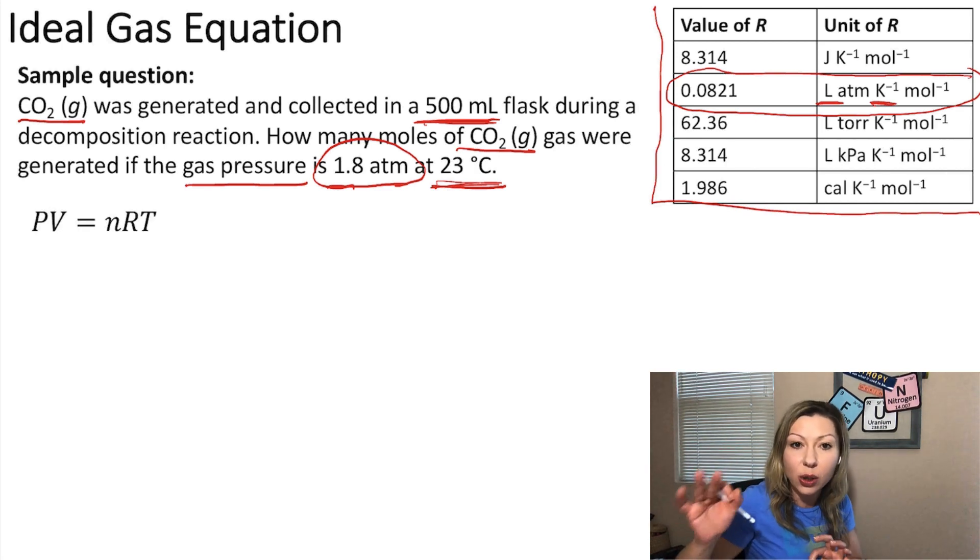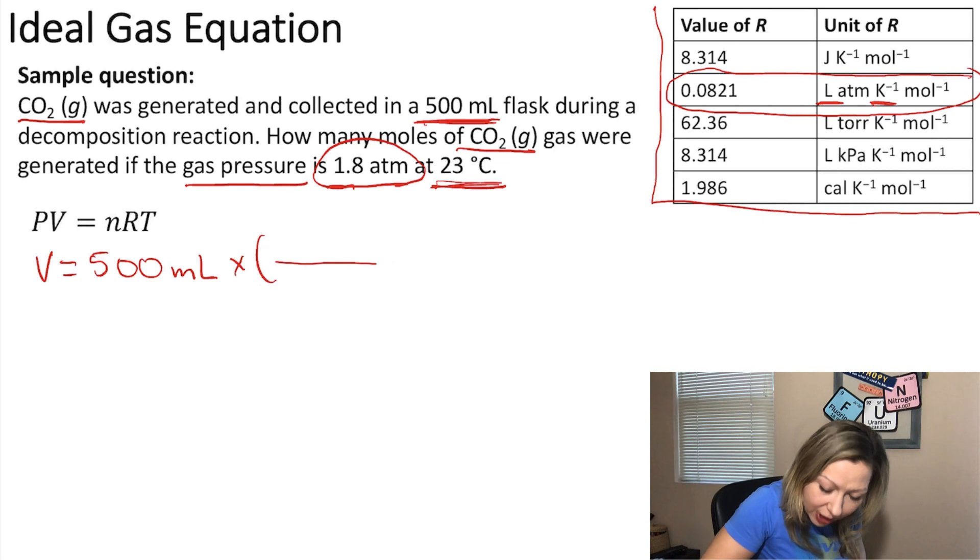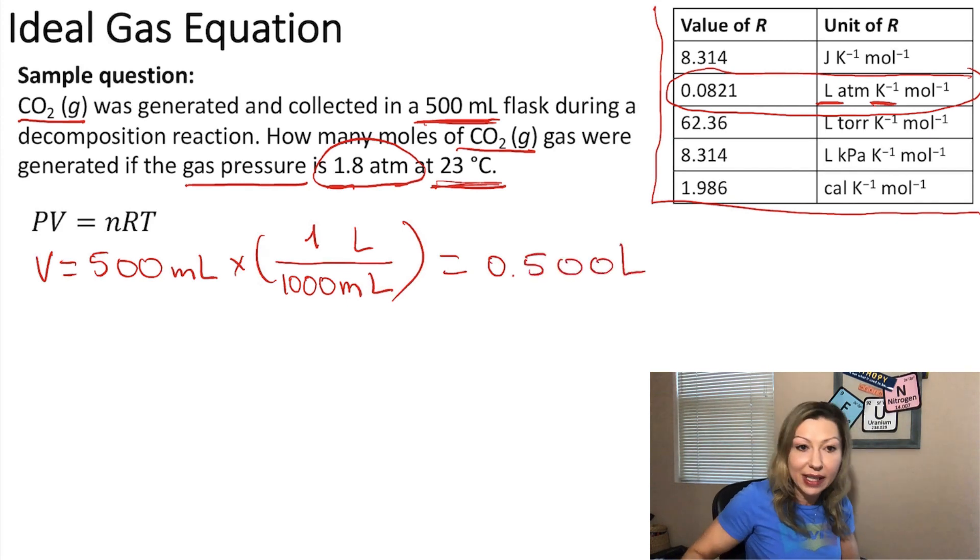Okay, so let's start with the conversions. We know that volume equals 500 mL and in order to convert that to liters we need to multiply that by a fraction where liters are on the top, milliliters are on the bottom, and you are going to get 0.500 liters.